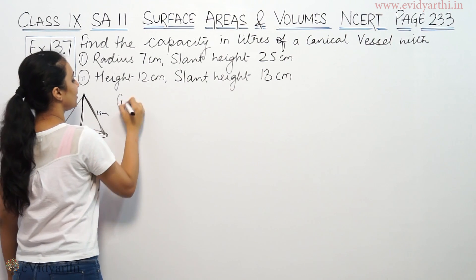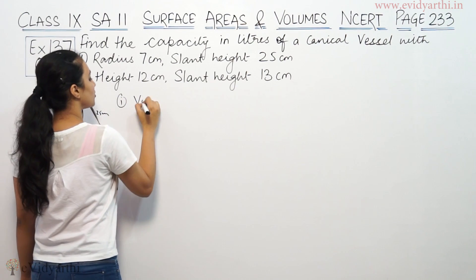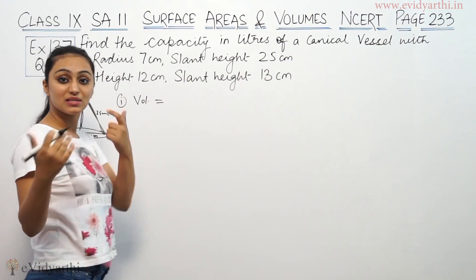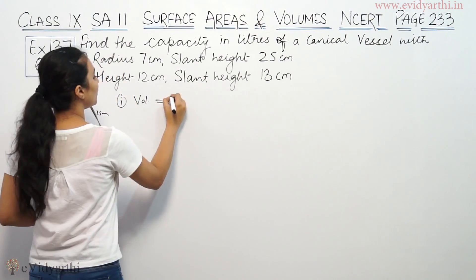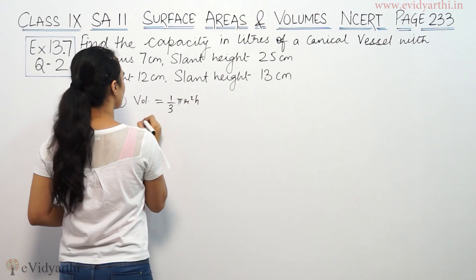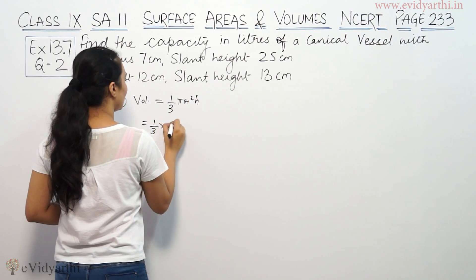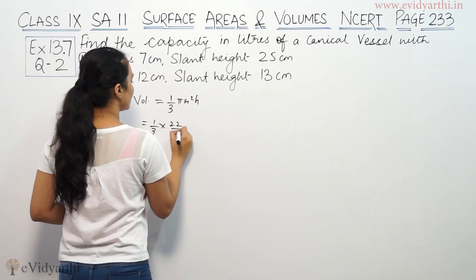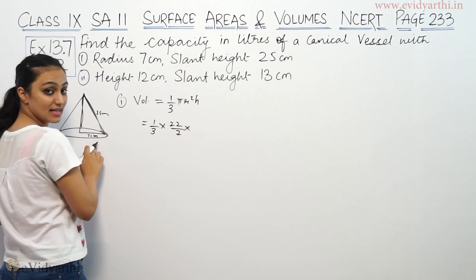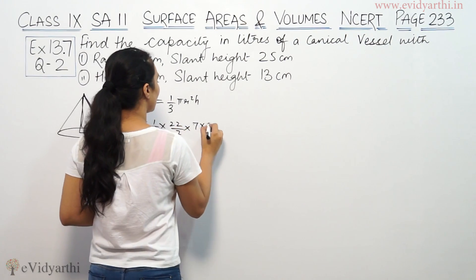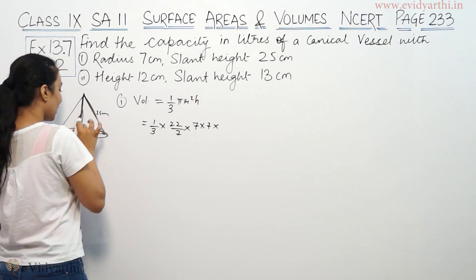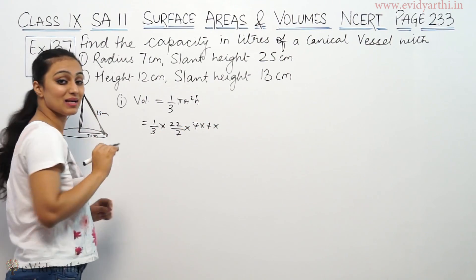So now we have to find the volume. Volume — the capacity of the vessel — means we need volume. Volume will be equal to 1 upon 3 pi r squared h. But we don't have height; we have slant height.